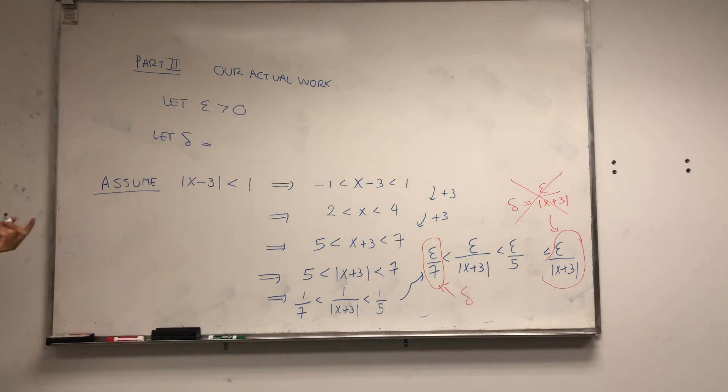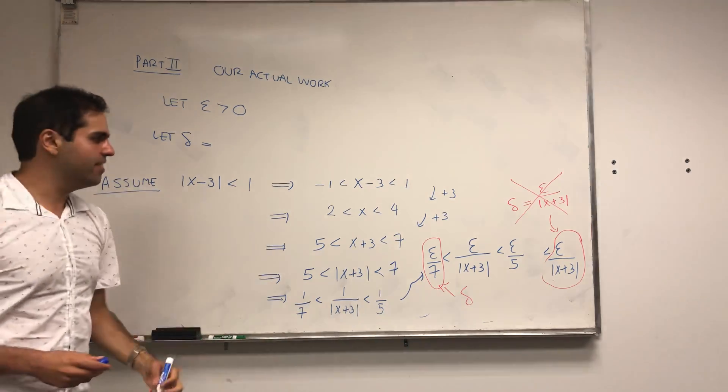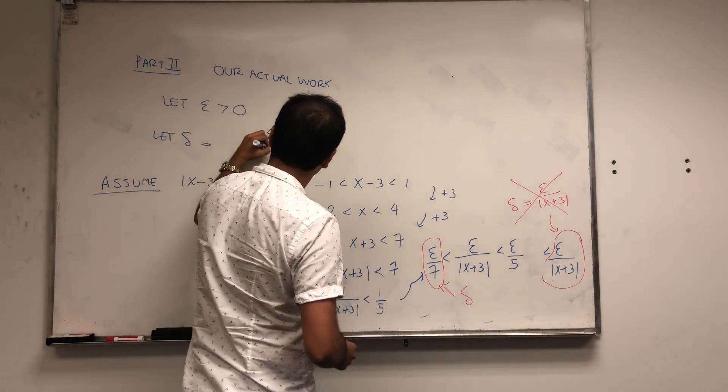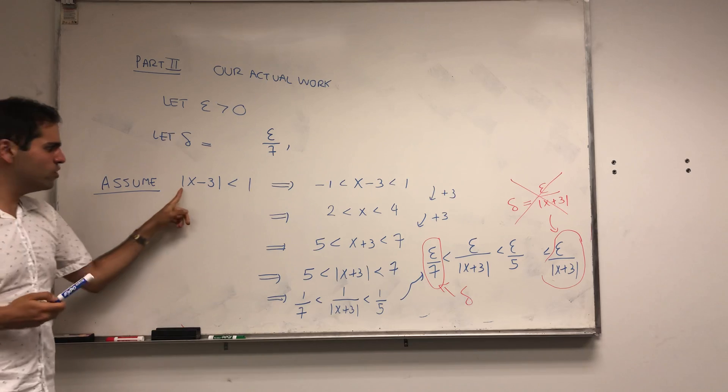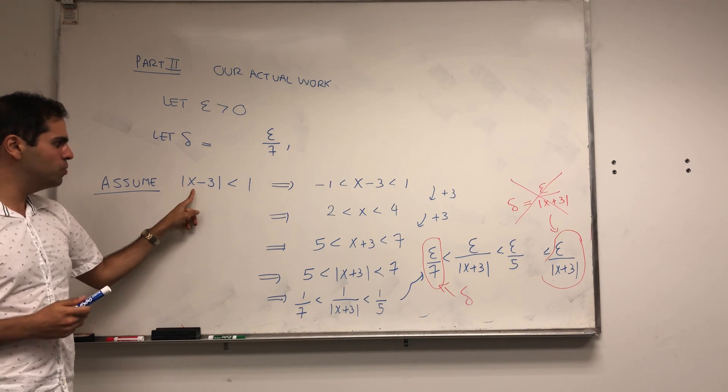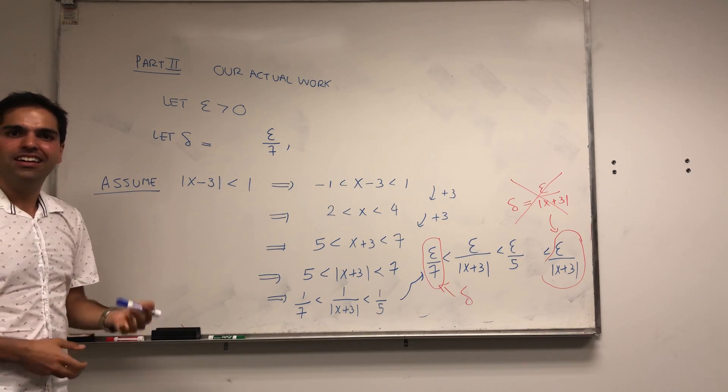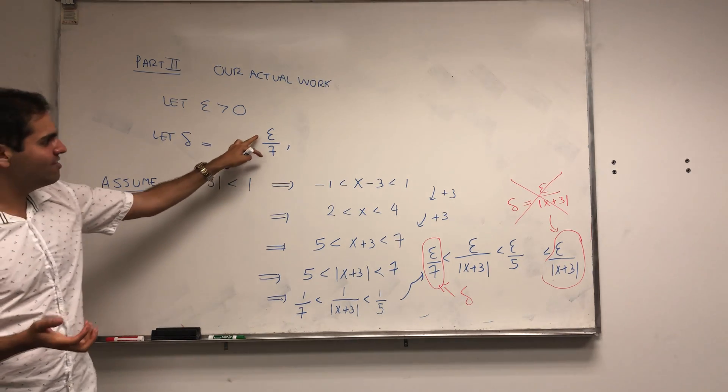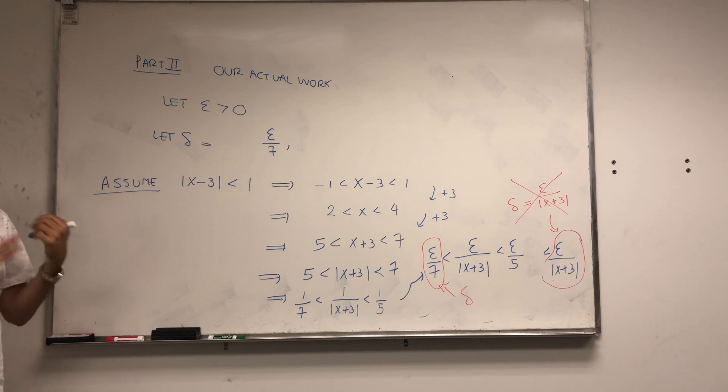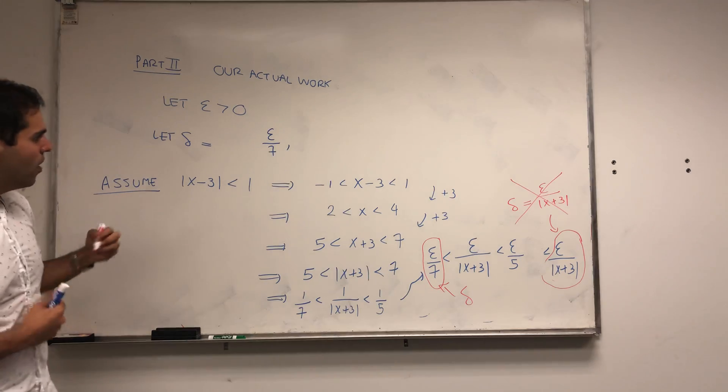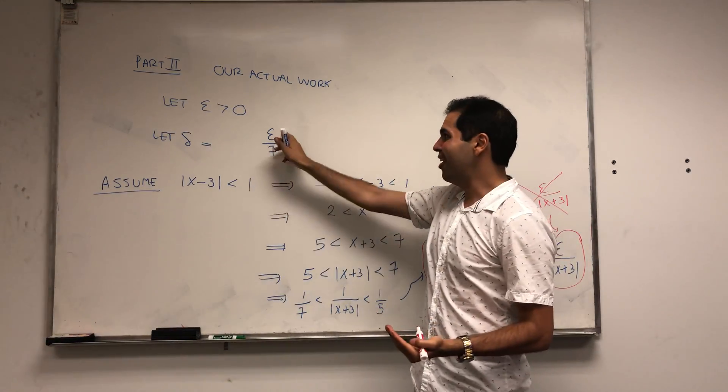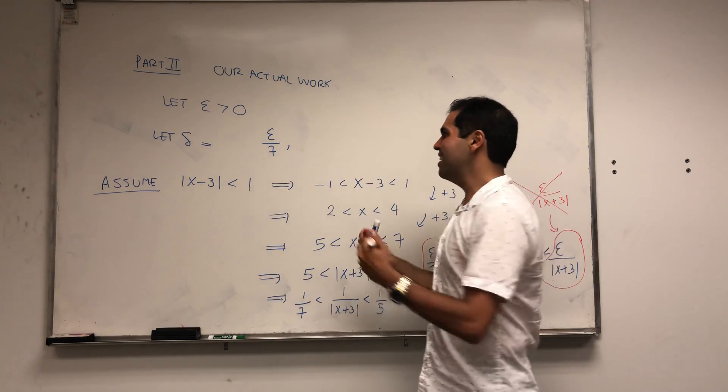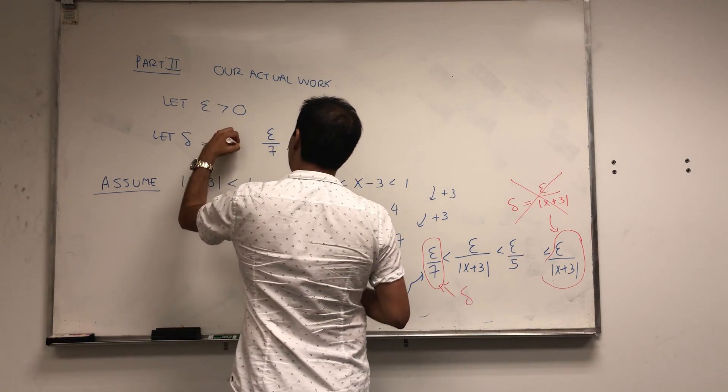Here's an interesting thing. Usually you just let delta be epsilon over 7, but there's one technicality. We also assume that x minus 3 is less than 1. So just say let delta be the smaller one of epsilon over 7 and 1, the minimum of the 2.